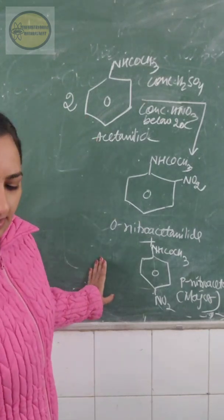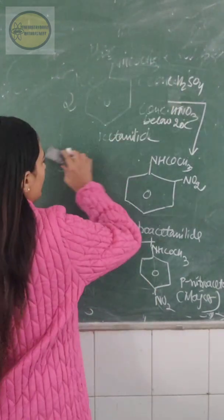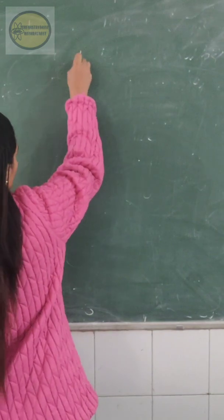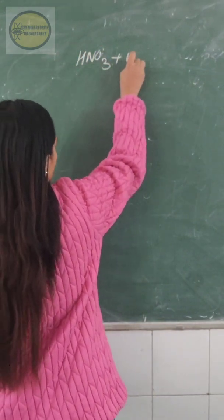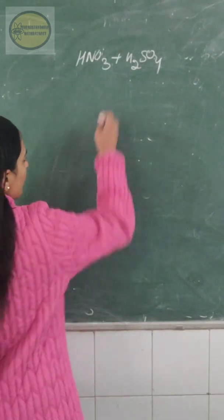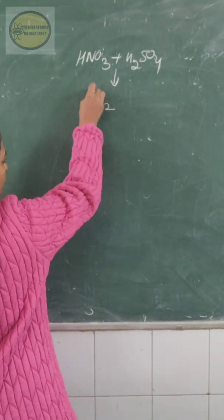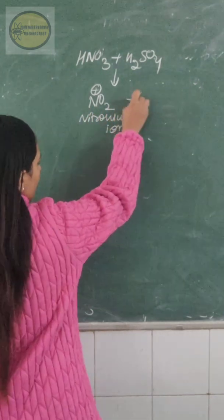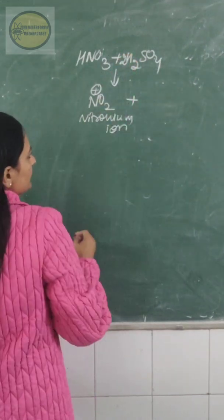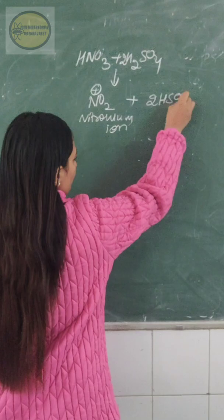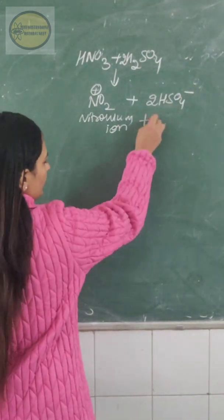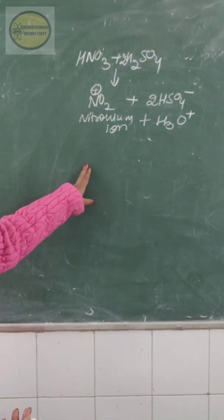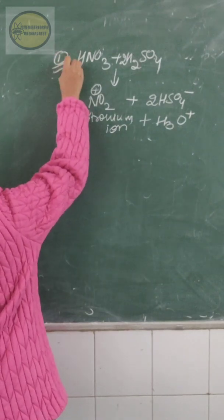So this is the reaction for this preparation. And what is the mechanism behind this reaction? Firstly the electrophile is generated. So your nitric acid and sulfuric acid, the nitrating mixture, it reacts and it will give you nitronium ion NO2+ and HSO4- negative ion and your hydronium ion. So what we required is only our electrophile that is nitronium ion. So this is the generation of electrophile step.